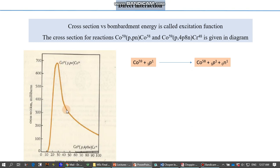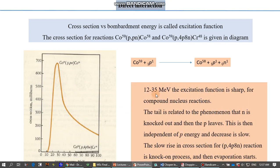A proton is evaporated as well as a neutron, and this curve we have to explain. The minimum or optimum energy required for this reaction is 12 to 35 MeV. In 12 to 35 MeV the excitation function is sharp. For the compound nucleus, the tail is related to the phenomenon that a neutron is kicked out and then the proton leaves.